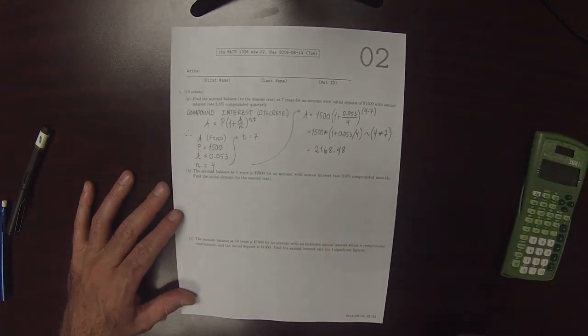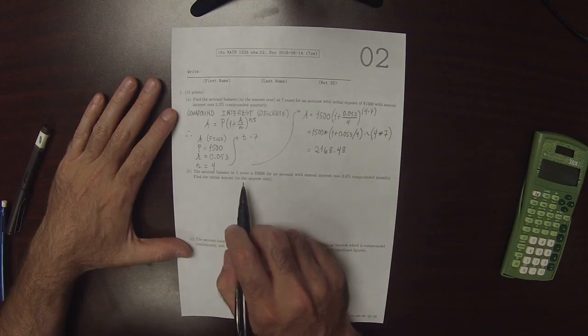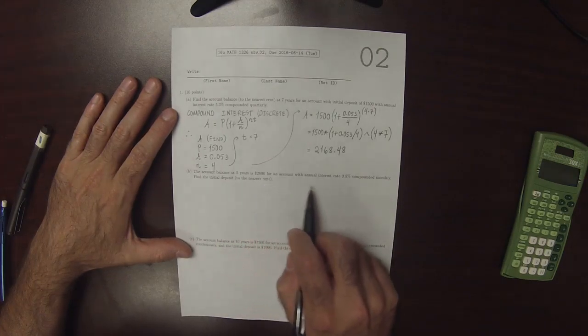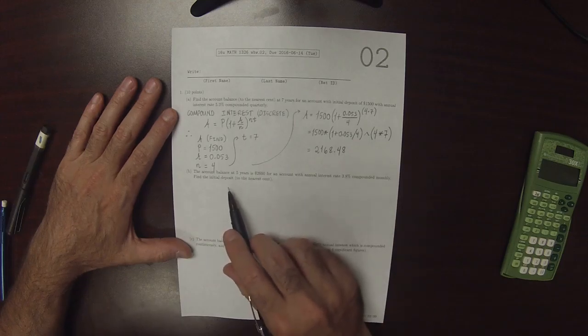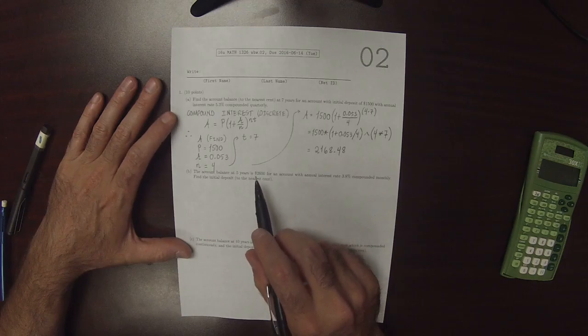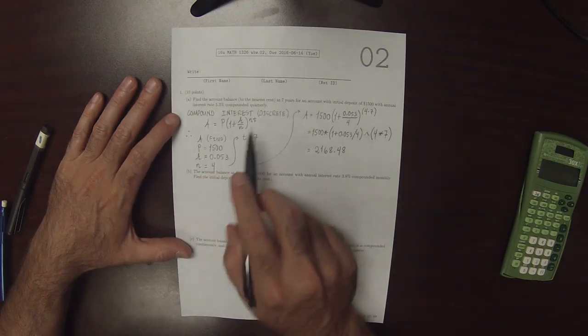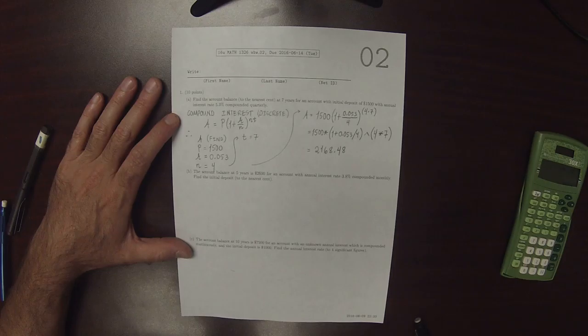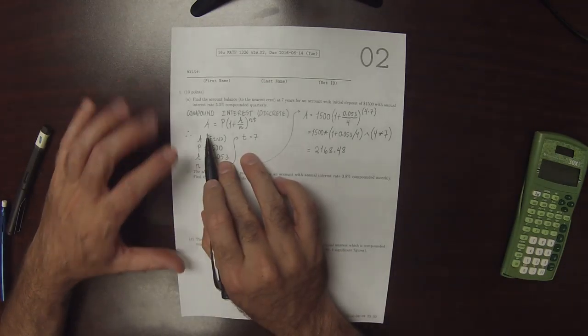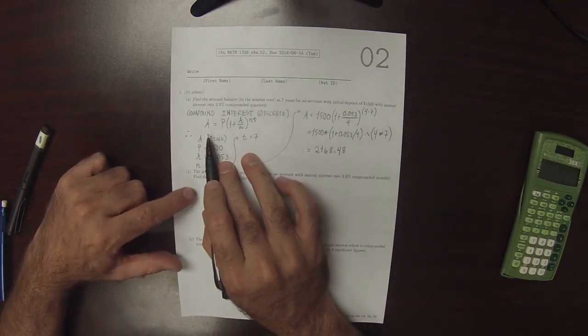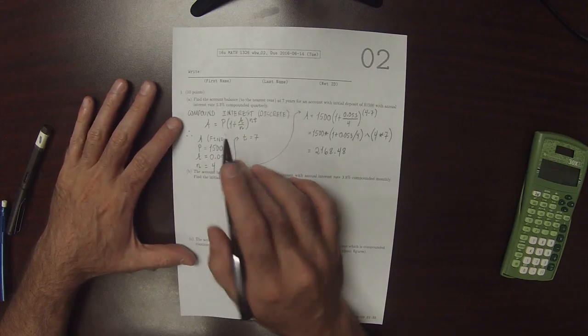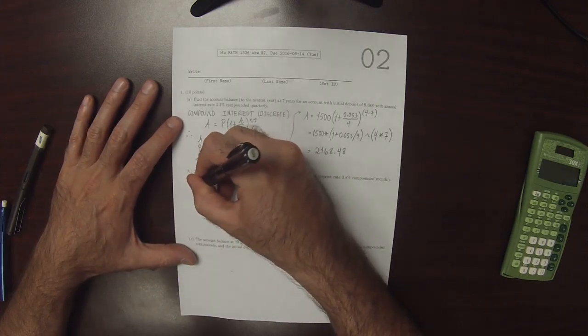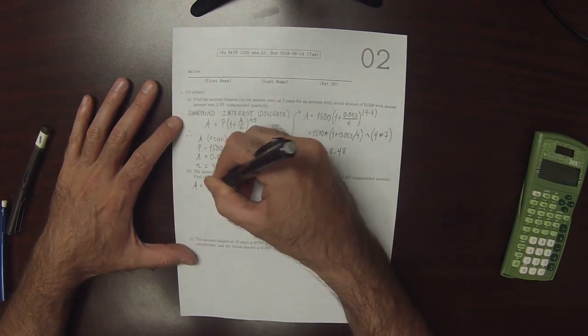Okay, so the next one. The account balance at 5 years is $2,600 for an account with annual interest rate 3.8% compounded monthly. Find the initial deposit. So again, this is the discrete compound interest formula, except now instead of finding A in part B, we're going to find P. So again, A is P times 1 plus R over N to NT.